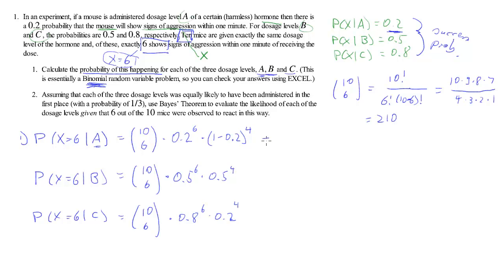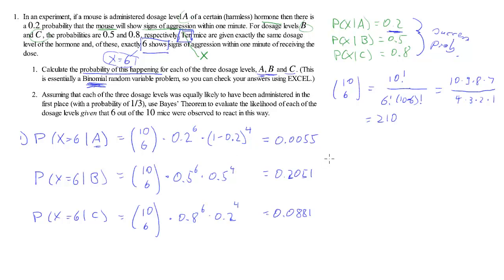We can verify this with Excel. What we find is that given dosage B the probability of getting 6 successes is approximately 21%, or 0.2051. Given dosage A — the lowest dose — there is only about a half percentage point probability, roughly 0.0055, of finding 6 mice that show regression. That is part 1.